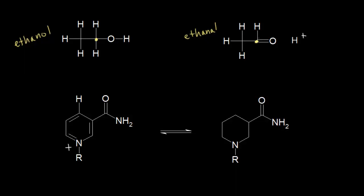So an increase in the number of bonds to oxygen is oxidation. You could also assign oxidation states to this carbon and you will see that there's an increase in the oxidation state of that carbon. You could also think about electrons — 'LEO the lion goes GER': loss of electrons is oxidation, gain of electrons is reduction. If I think about these electrons here in magenta, you can see that those electrons are lost from the ethanol molecule, so loss of electrons is oxidation — ethanol is oxidized.